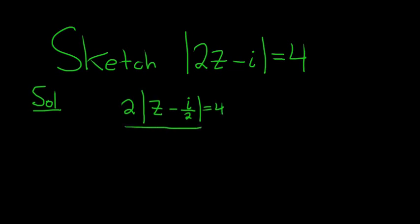Simply divide by 2, and we end up with the modulus of z minus i over 2 equals 2.